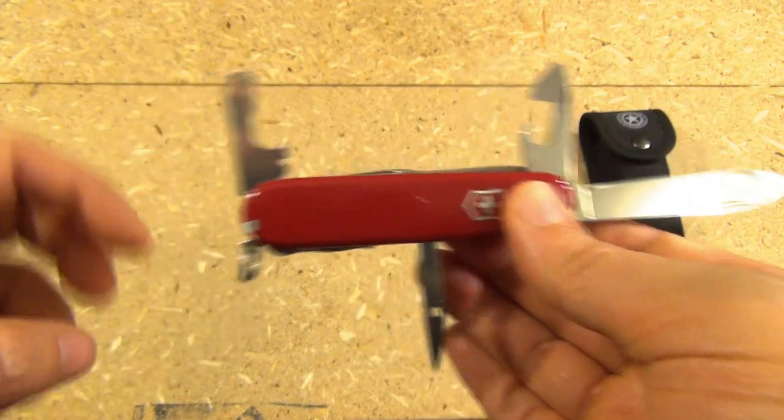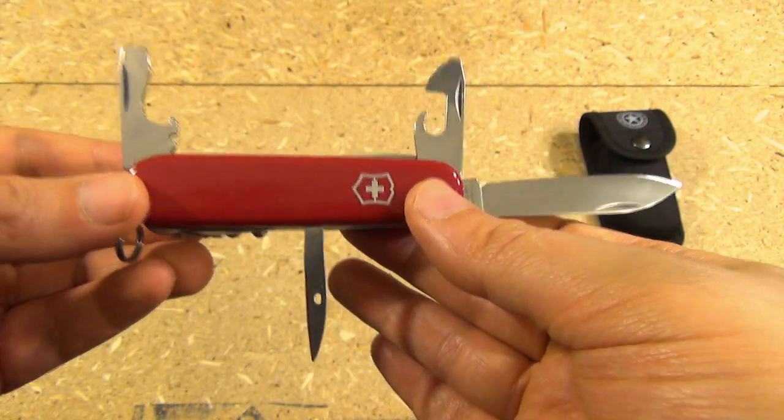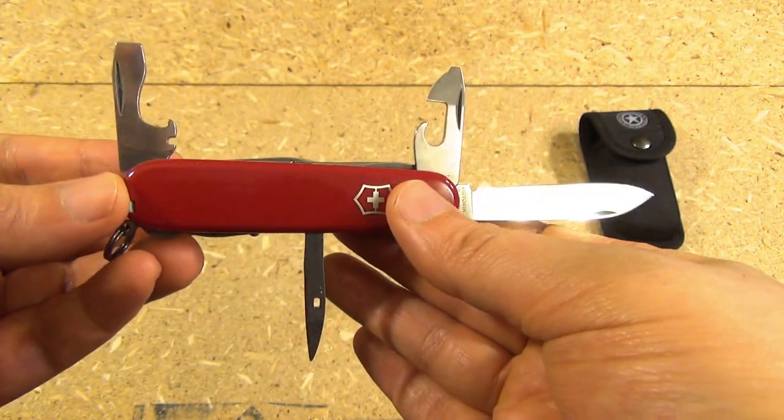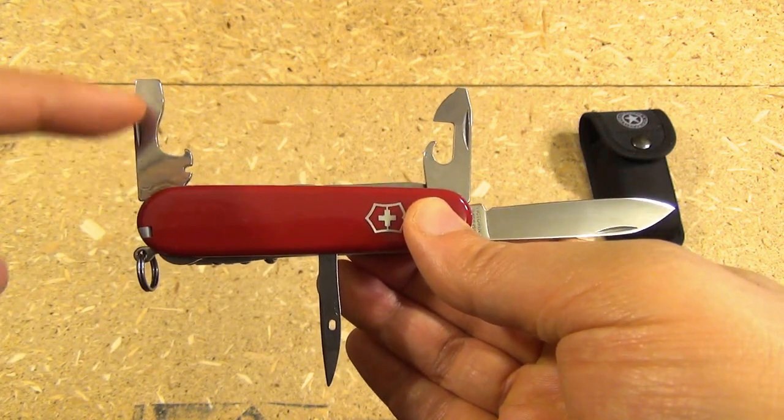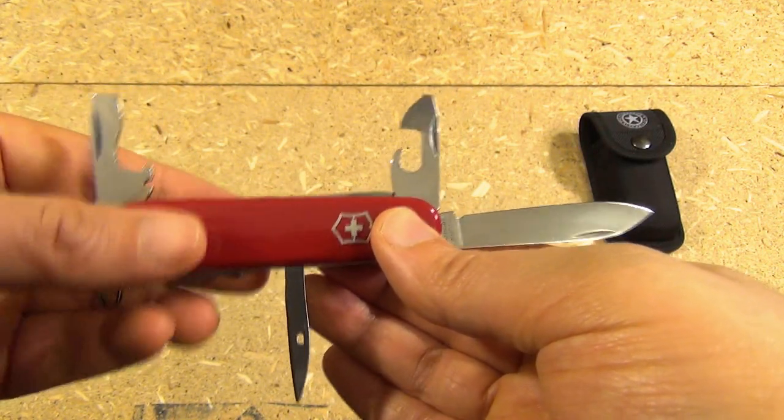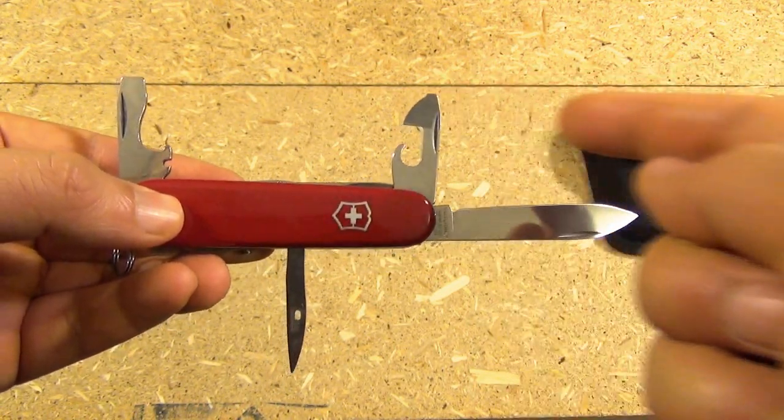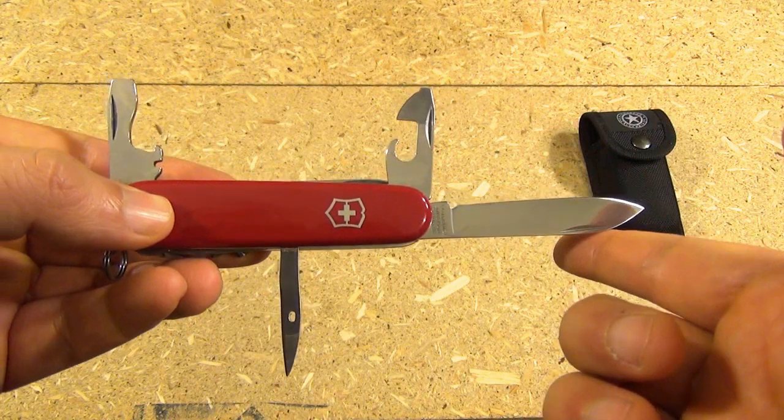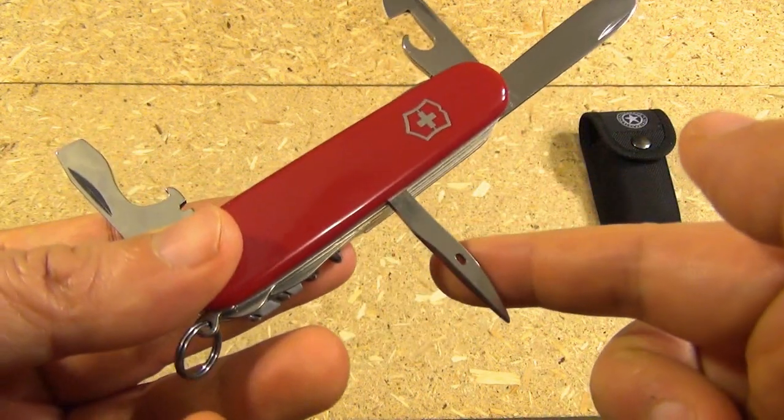The first set of features is what I call the foundation set, because it goes back to the World War II GI Swiss-type knives. You've got the cap lifter with wire stripper and a flathead. You've got the can opener, also with a flathead that works on some Phillips. You have the flat-ground, plain-edge blade, and you have a reamer.